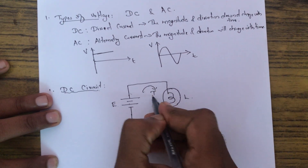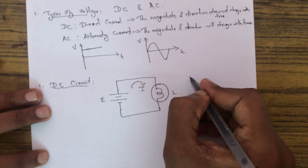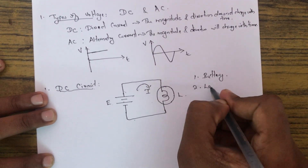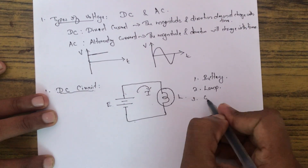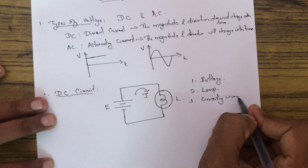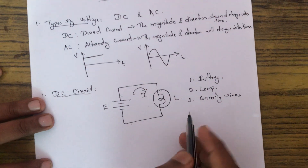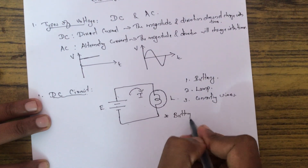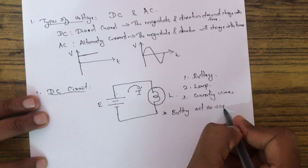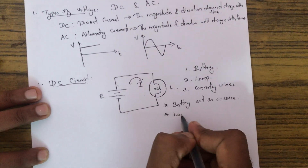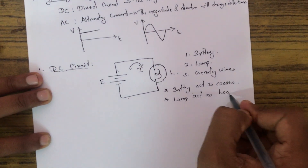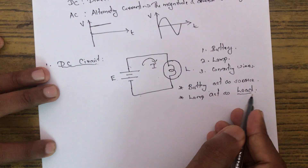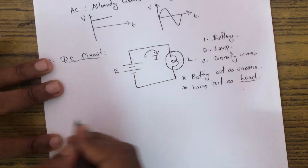Since it is a closed path, current I will flow through it. The three circuit elements are: the battery, the lamp, and the connecting wires. The battery acts as the source of supply, and the lamp acts as the load — any device that consumes electrical energy is called a load.